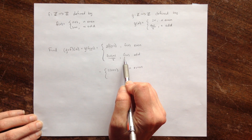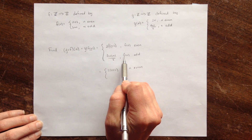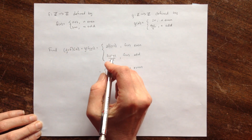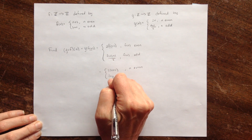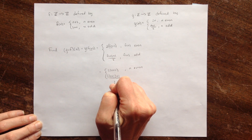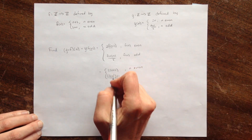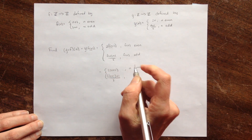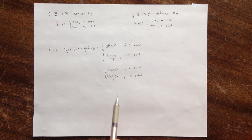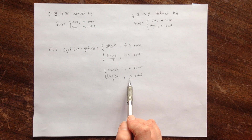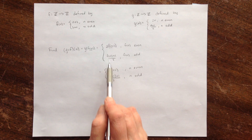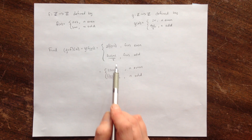Similarly, when do I use the other part of the rule? I use it when f of n is odd. f of n is definitely odd when n is odd. So I'm going to have f of n, which is 2n plus 1, giving (2n plus 1 plus 1) over 2, if n is odd. If n is odd, then f of n is equal to 2n plus 1, and so I plug in 2n plus 1 there, getting (2n plus 1 plus 1) over 2.